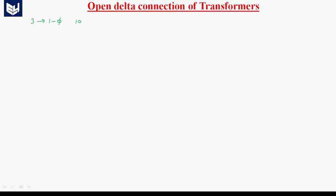In an open delta connection, out of three single phase transformers, one transformer is open-circuited or removed due to some fault existing in the system. This is the reason why it is also called the VV bank.